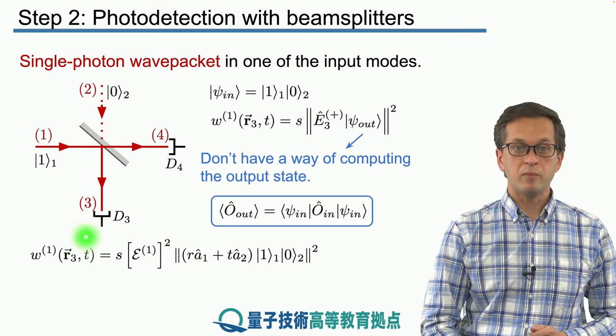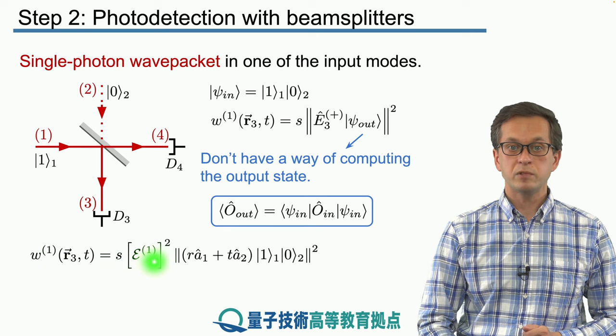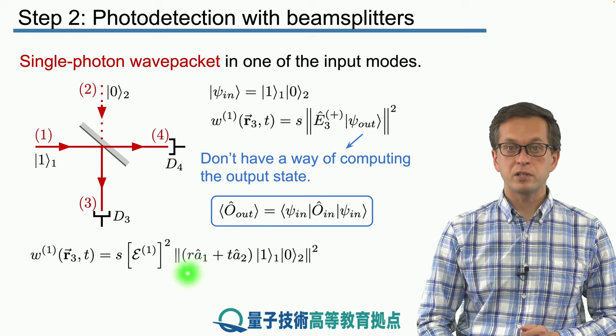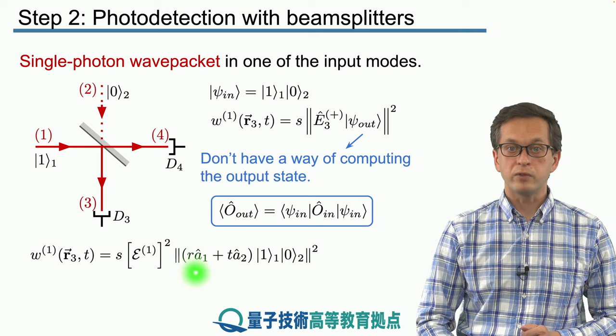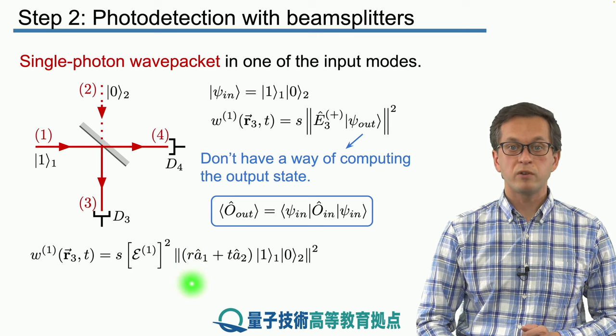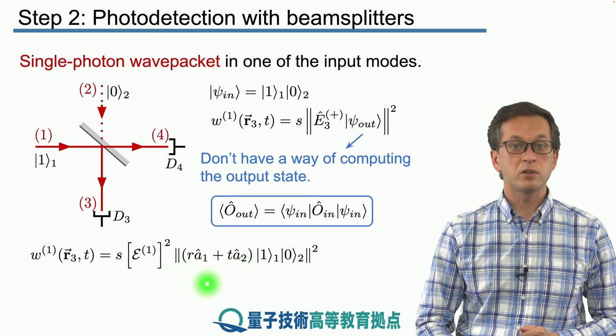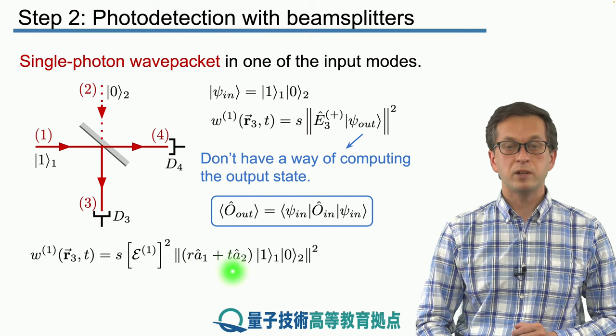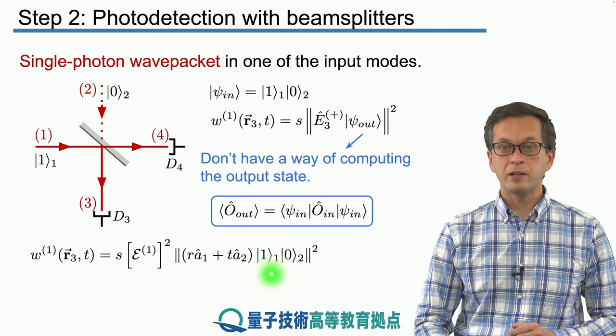Then we get that W1 is equal to S times one photon amplitude squared, and then we have modulus of this following expression. We've got E3 here, which we can rewrite in terms of A1 and A2. A3, which we rewrite as R times A1 plus T times A2 applied to our input.